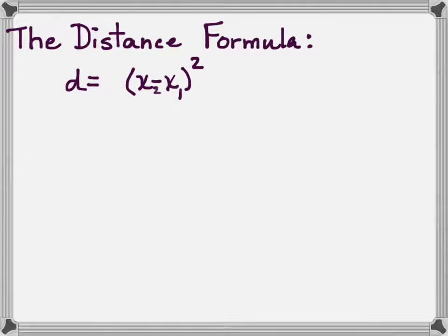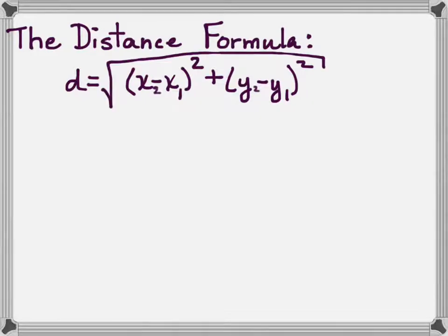And what we're going to do is if we have two points x1, y1, x2, y2, we take the difference in the x coordinates and square it. To that we add the difference in the y coordinates squared and then take the square root.